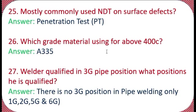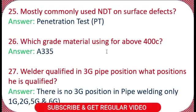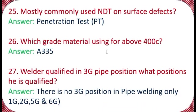Question 25: What is the most commonly used NDT method for surface defects? The answer is penetration testing (PT) — PT is used only for surface defects. Question 26: Which material is used above 400 degrees Celsius? The answer is A335. Question 27: A welder is qualified in 3G and 5G positions — what positions are qualified? There is no 3G position in pipe welding; for pipe, only 1G, 2G, 5G, and 6G positions exist.